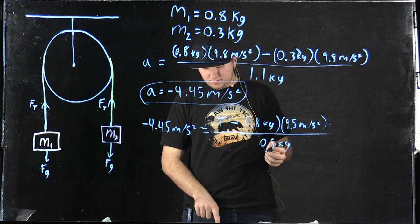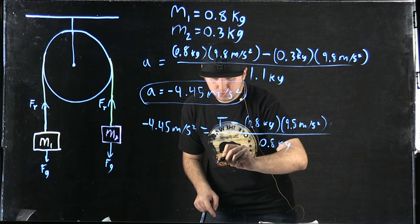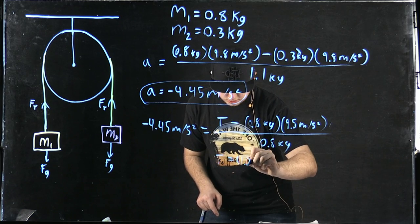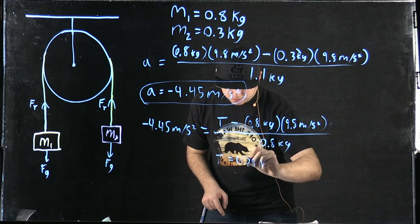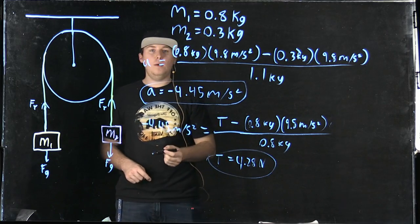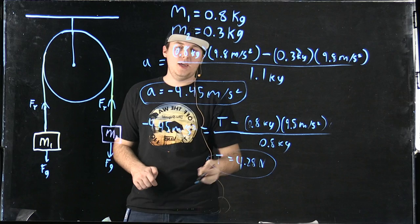Now, this gives us T equals 4.28 newtons. So that's how you solve this problem. That's how you find the magnitude and direction of the acceleration and the tension force.